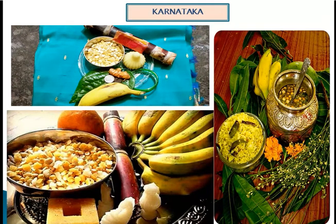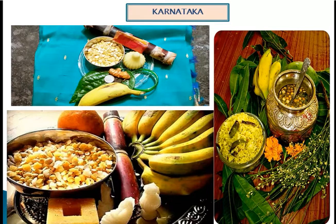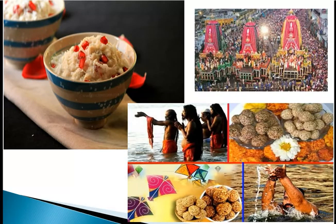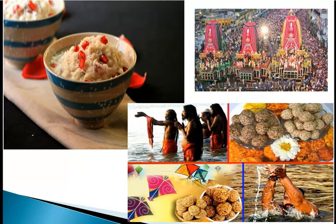Farmers in Karnataka celebrate it as Suggi or the harvest festival and decorate their bulls and cows in colorful costumes. Farmers jump over fire with their bulls in a ritual called Kichhu Haisuvudu. In Kerala, Makar Sankranti is celebrated as thousands gather to see the Makaravilakku flame on Ponnambalamedu hill near the Sabarimala temple, where the Makara Jyoti — a celestial star — appears in the sky, believed to be Lord Ayyappa showing his presence. In Bihar and Jharkhand, people bathe in rivers and ponds and feast on dishes made with sesame and jaggery. The second day is Makarath, where people relish special khichdi served with chokha, papad, ghee, and achar.